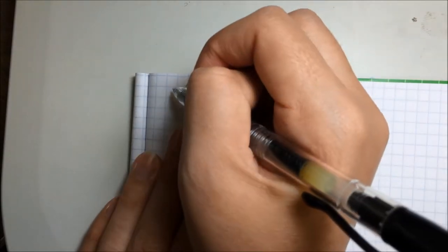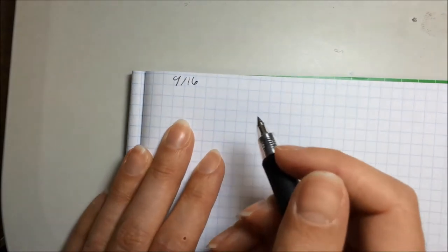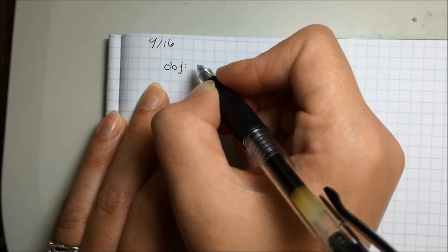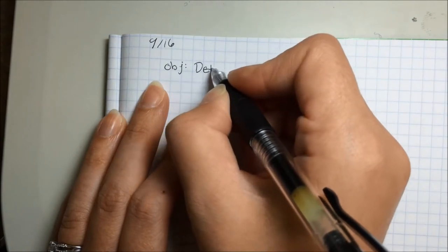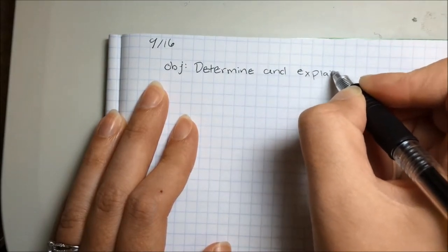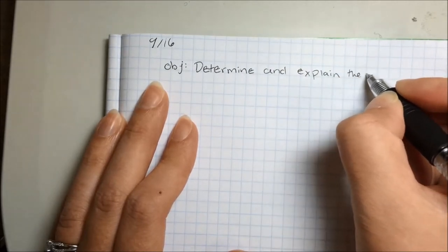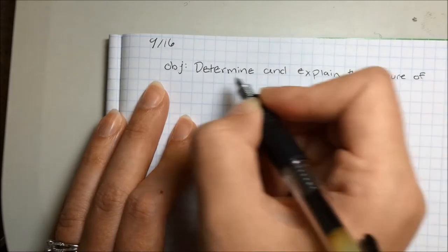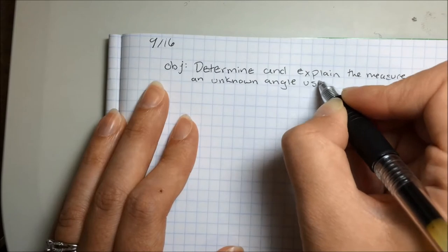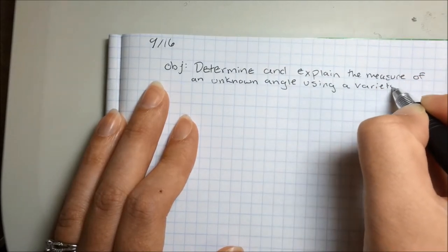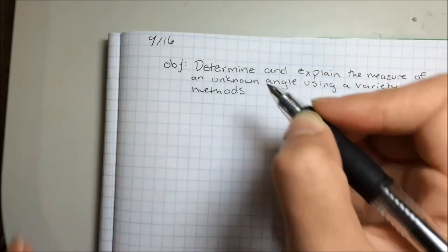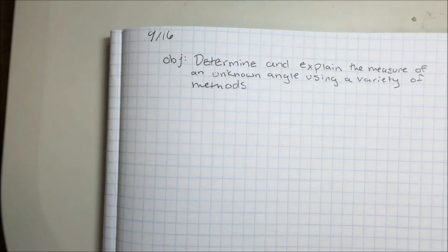Today's date is 9-16. Our objective is to determine and explain the measure of an unknown angle using a variety of methods. We're definitely going to need our blue pen for this.